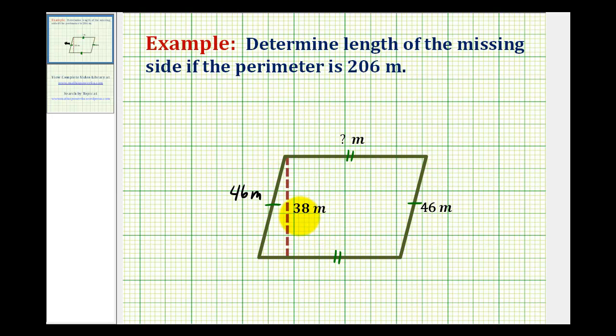Now the height being 38 meters is irrelevant to this question because we're dealing with the perimeter. So we can ignore this length of 38 meters.